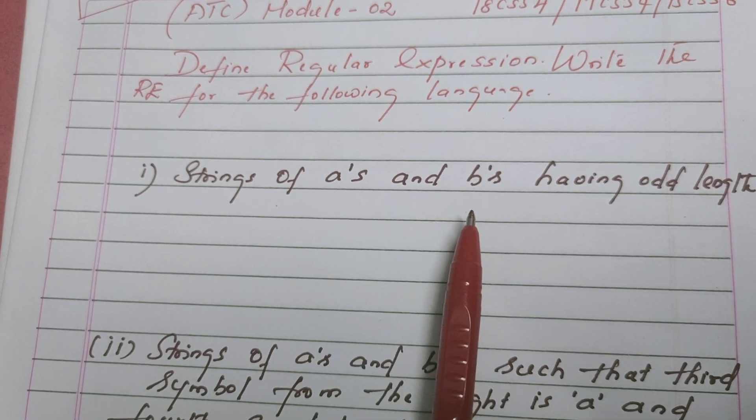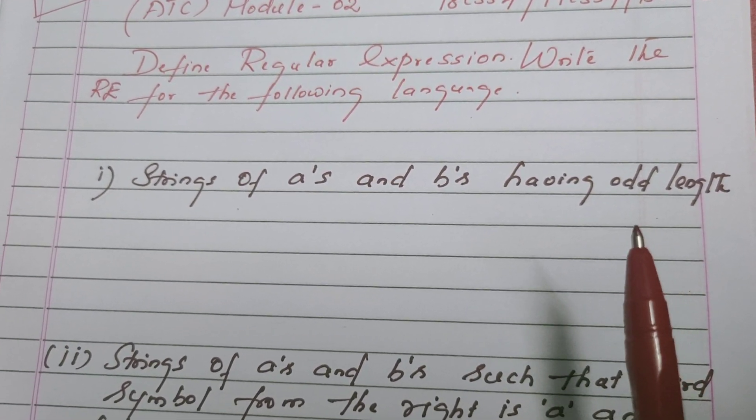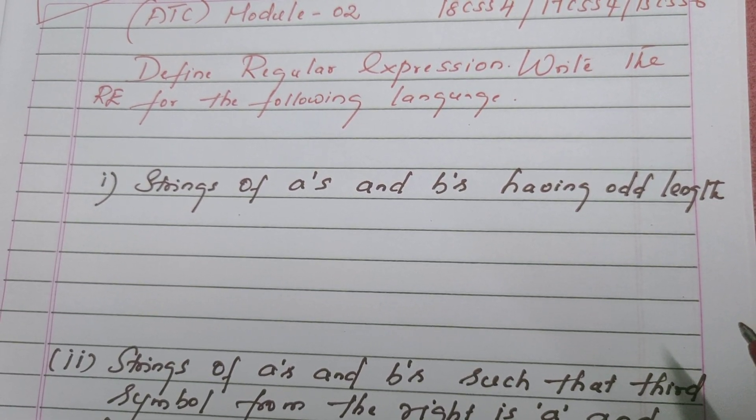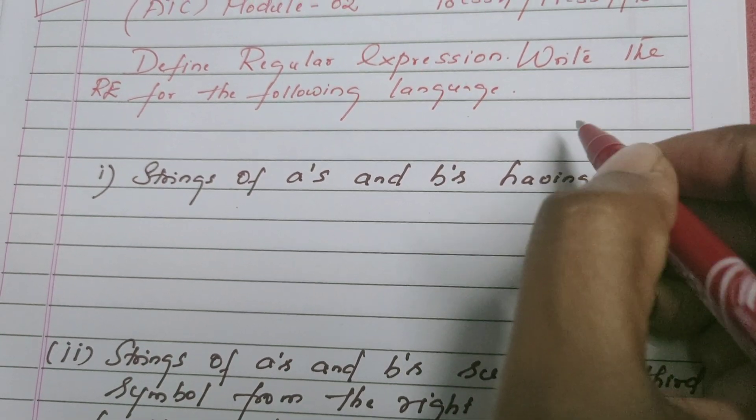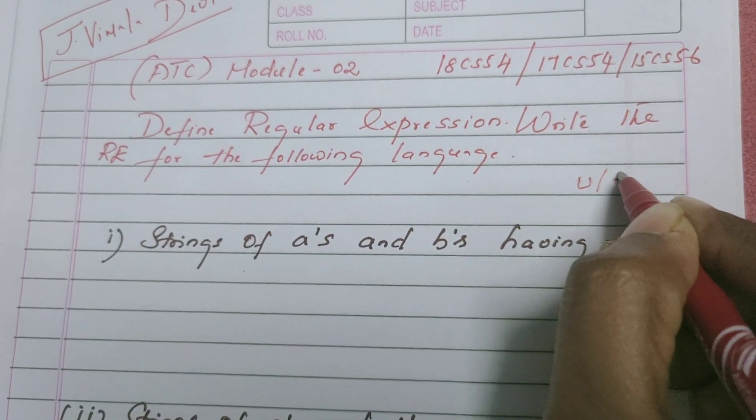goes like this: strings of A's and B's having odd length. Before finding the solution for this, I just remind you regular expression uses only three operators. One is union, this union can be given by plus symbol also,